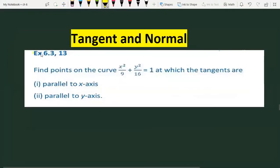Exercise 6.3, Question 13 on tangent and normal topic. Find the points on the curve x²/4 + y²/16 = 1 at which the tangents are